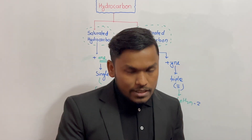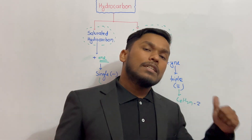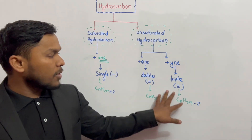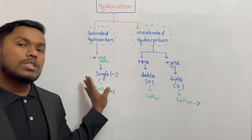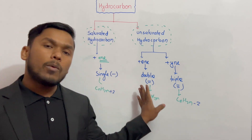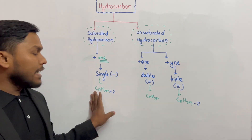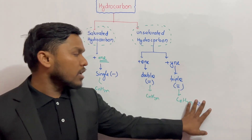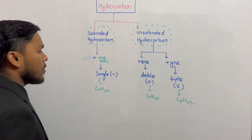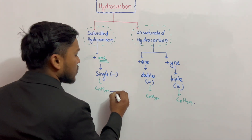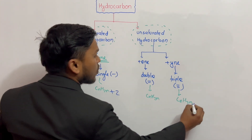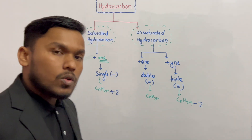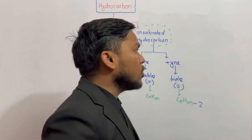Saturated and unsaturated hydrocarbons — single bond, double bond. General formulas: CnH2n, CnH2n+2, CnH2n-2. Hydrocarbon types based on bonding.